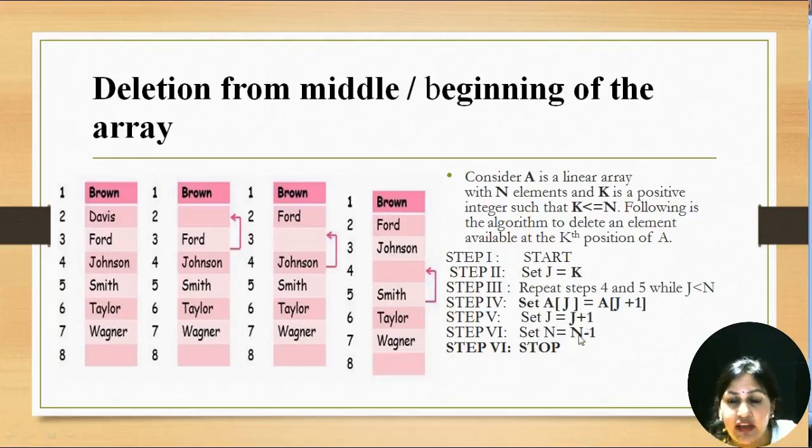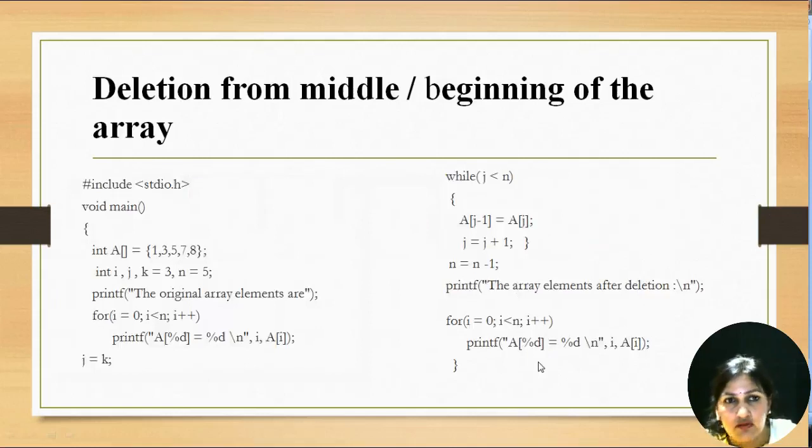Now in the last we have to decrement the number of elements in the array. So we will decrease the value of n by 1. n is equal to n minus 1.